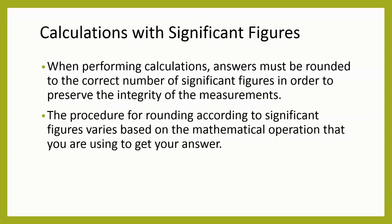When we do calculations in a science class, answers need to be rounded to the correct number of significant figures because we need to preserve the integrity of the measurements. So if the scientists took a lot of time getting really detailed measurements, we need to account for that in our answer.